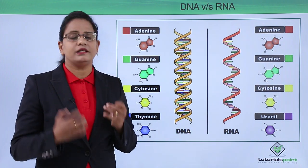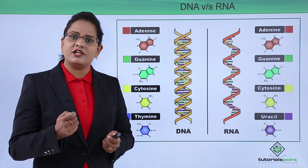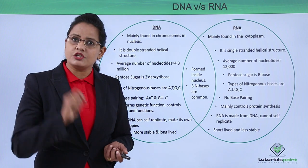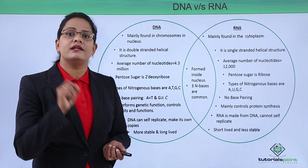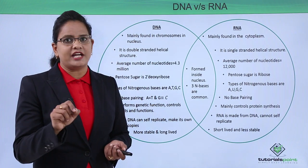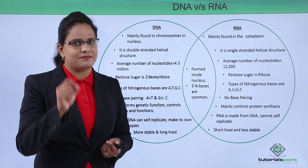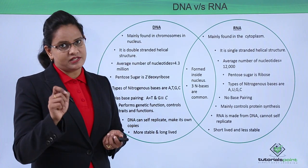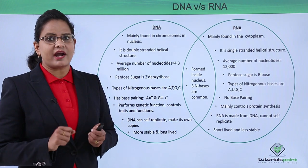Let us see in more detail how these structures define the functions. The location of DNA is inside the chromosomes in the nucleus. The location of RNA is mainly in the cytoplasm — it is the mRNA which is sometimes found in the nucleus. DNA is a double stranded helical structure, while RNA is a single stranded but helical structure.